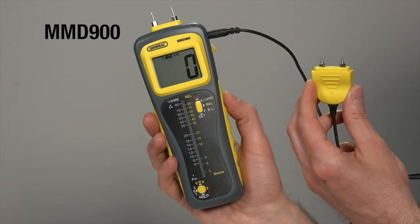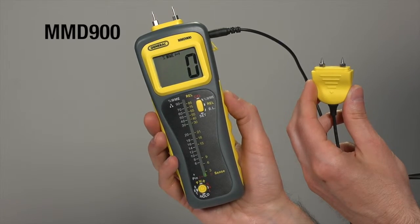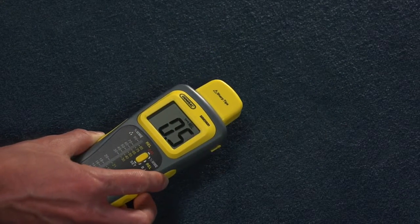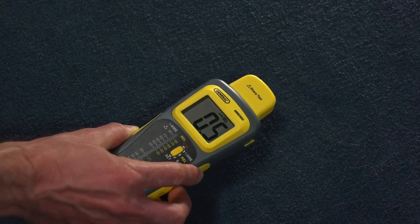General Tools and Instruments Pin Pinless Deep Sensing Moisture Meter with Remote Probe Model MMD900. Check for moisture on or below the surface of carpets and subfloors.